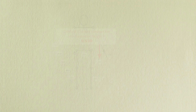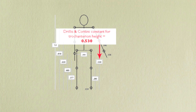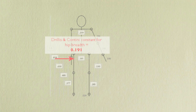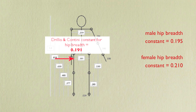If we use the ANSAR data to create new proportionality constants, we find that some body dimensions, such as trochanterian height, are actually very close to the Drillis and Cantini constants. Measures such as hip breadth differ from the original study and are slightly divergent for men and women.